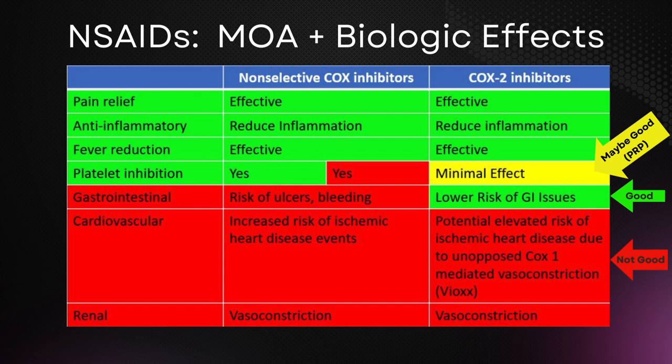COX-2 drugs are no better for pain than non-selective NSAIDs, and compared to non-selective NSAIDs, they may put patients at increased risk for cardiac events. COX-2 drugs may not have the same effect on platelets and PRP that we see with non-selective NSAIDs, making their effect on PRP therapy less clear.